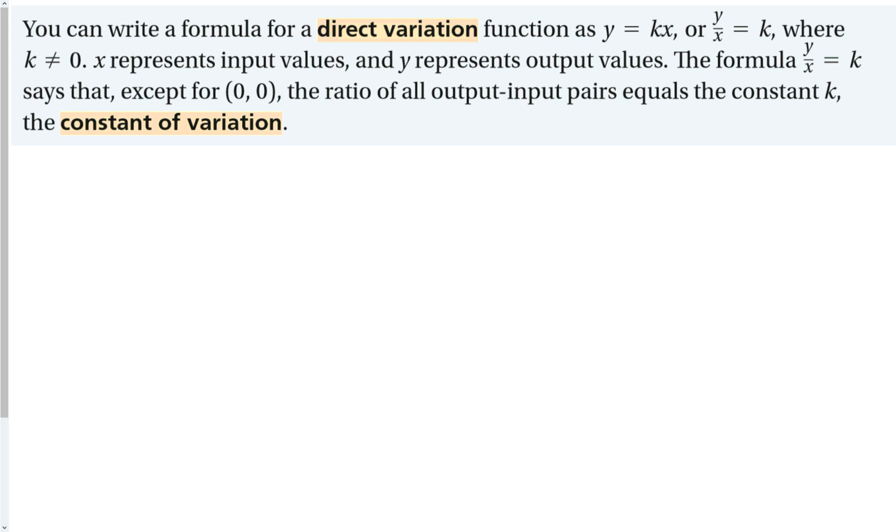We can write a formula for direct variation as y equals k times x. Basically, if I make x go up, this thing is going to stay the same, that means y has to go up.